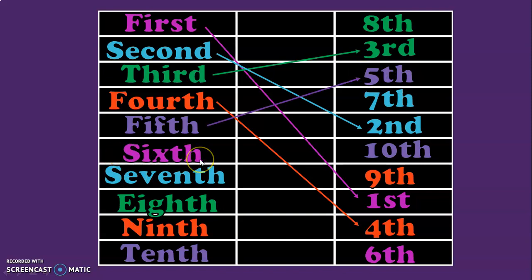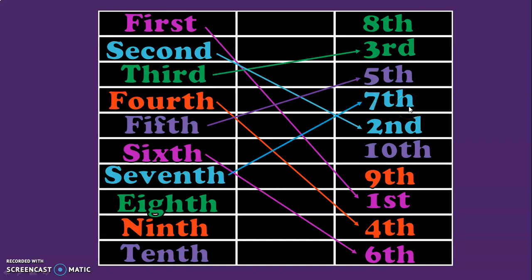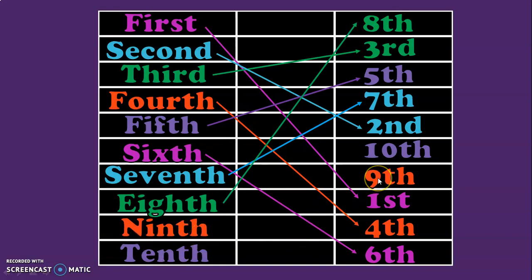Sixth — S-I-X-T-H — and the numeral corresponding to this is 6 followed by T-H. The next number name is seventh — S-E-V-E-N-T-H — and the numeral corresponding to that is 7 followed by T-H. The next number name is eighth — E-I-G-H-T-H — and the numeral corresponding to that is 8 followed by T-H. Ninth — N-I-N-T-H — and the numeral corresponding to this is 9 followed by T-H. The last number name is tenth — T-E-N-T-H — and the numeral corresponding to tenth is 10 followed by T-H.